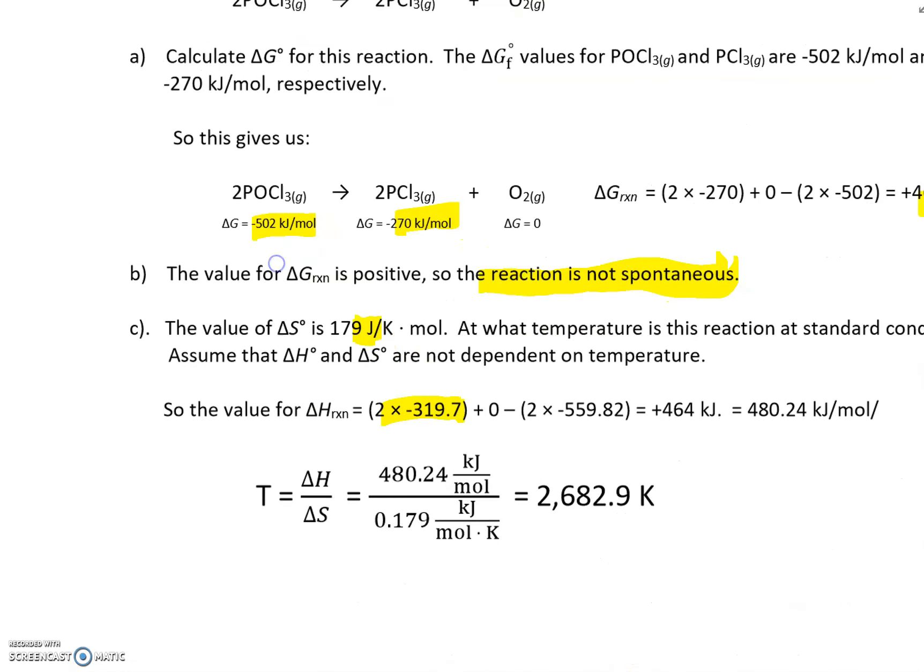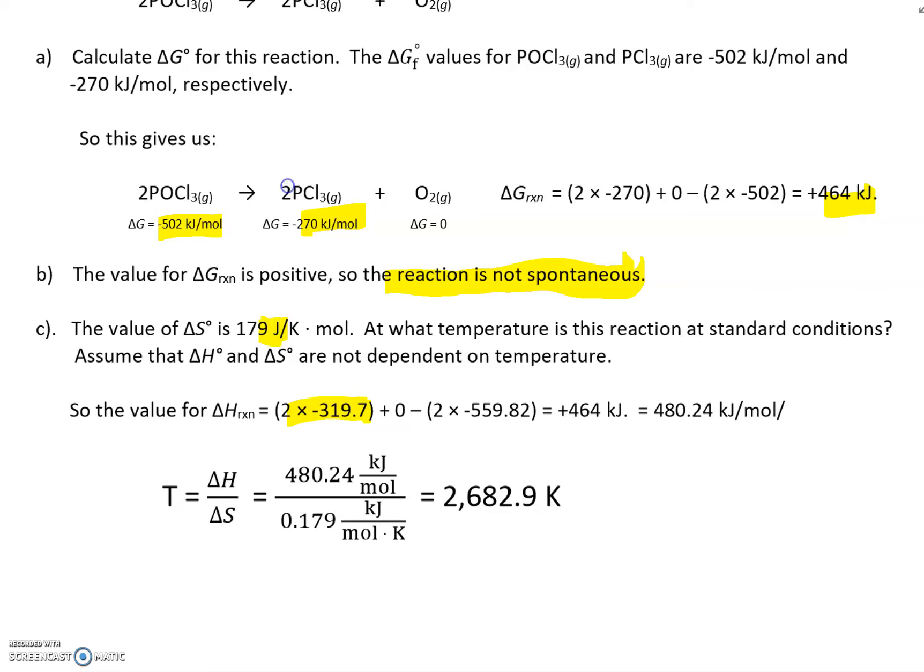So I got a delta G of 464. I got a delta H of positive 480.24. There's really no reason to express it to that many decimal places. Nothing else does, but I'm being a little overthrow. And we're converting our value of delta S to kilojoules. And remember that the units cancel. Kilojoules cancels kilojoules. Moles cancels moles. Our answer's in Kelvins. And I got 2682.9.